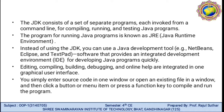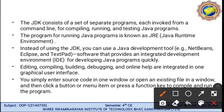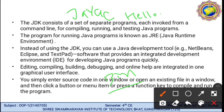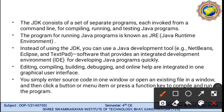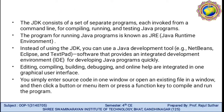You simply enter the source code in a window or open an existing file, then click a button or menu item or function key to compile and run the program. The compiled Java program is stored in the bin directory. To compile, write javac HelloWorld.java and press enter. To run the program, simply write java HelloWorld.